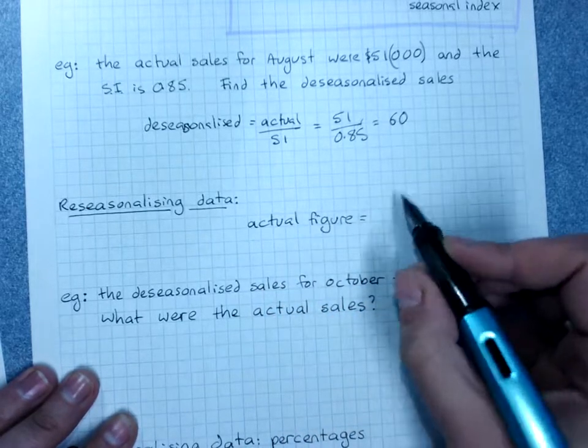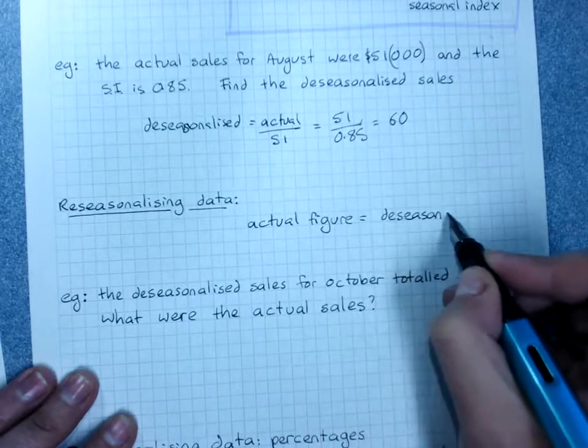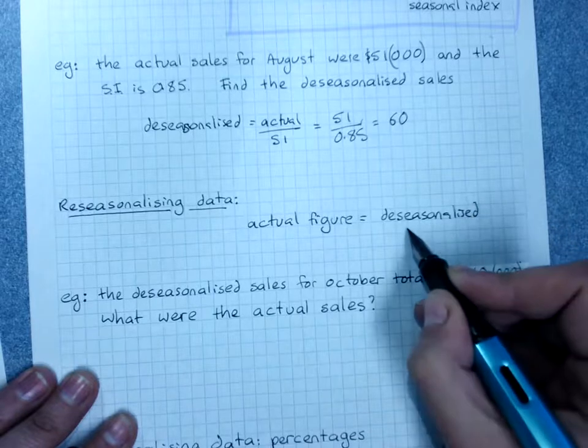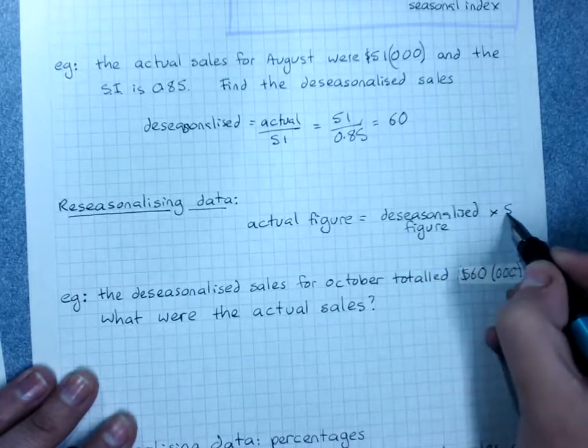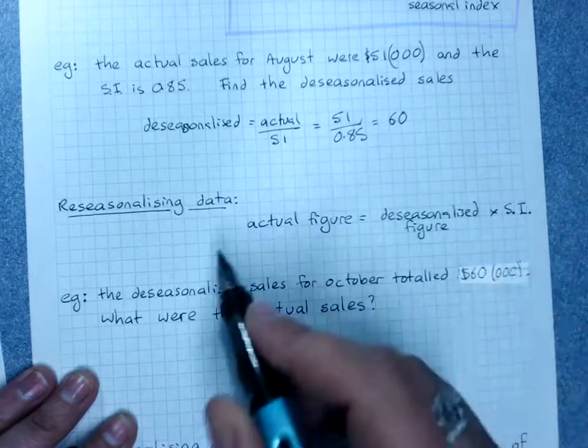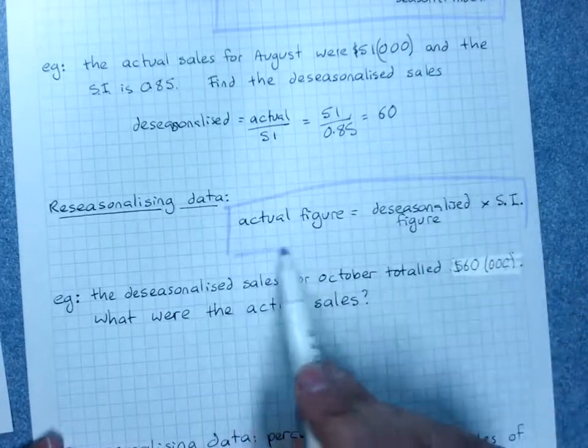The formula for re-seasonalizing data - the actual figure equals the de-seasonalized number times the seasonal index. And there's our second important formula there.